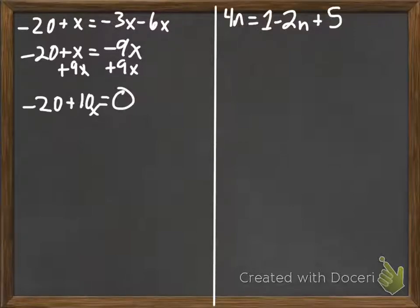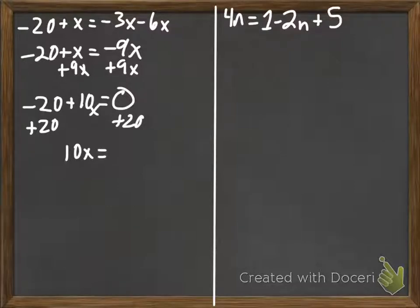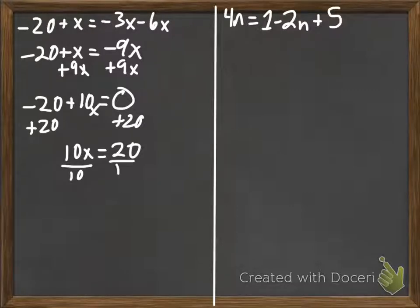Now we can solve this like a two-step equation. We move the number not with x, so plus 20 plus 20. Recall that 10x is really 10 multiplied by x, so 10 times x equals 20. To undo multiplication, we divide — so we get x equals 2.